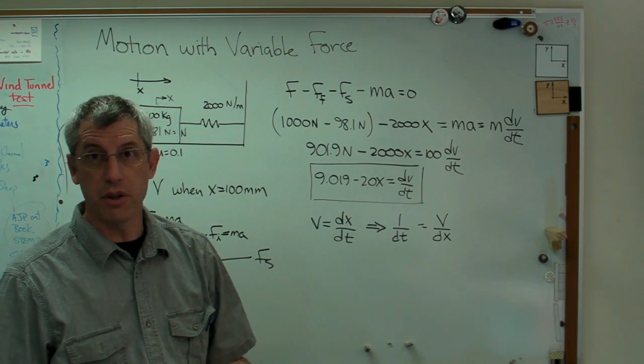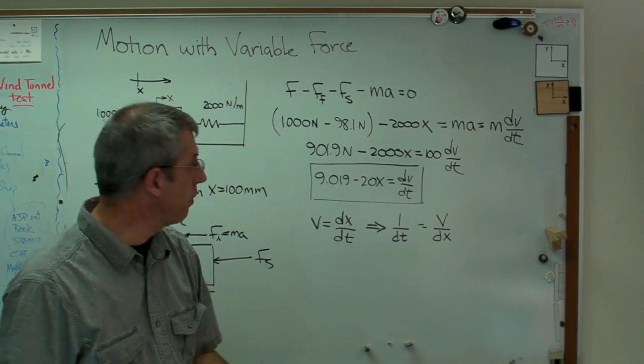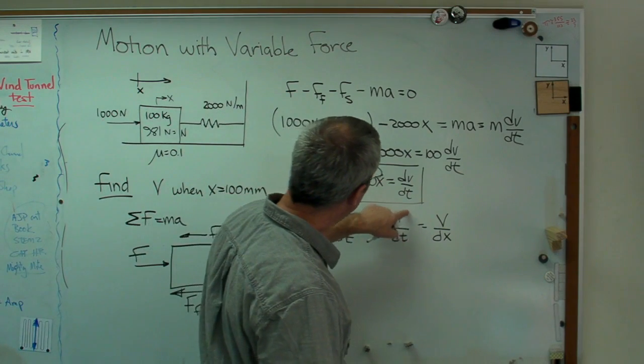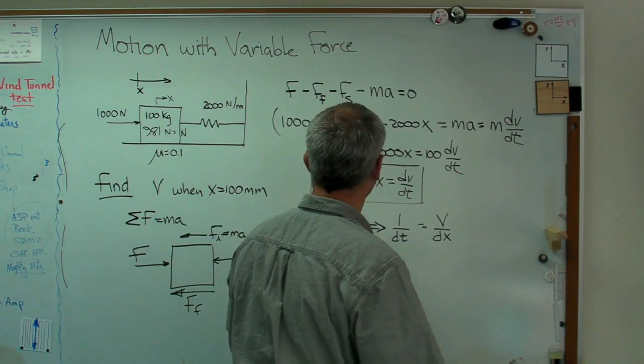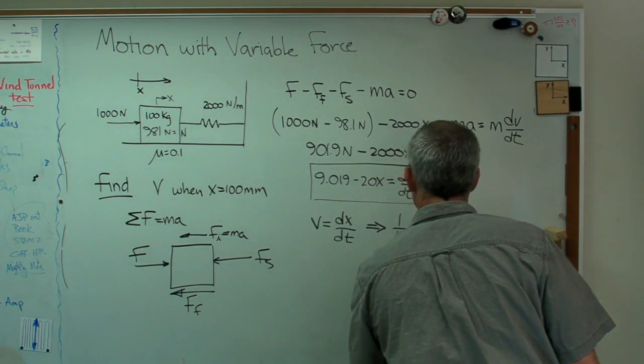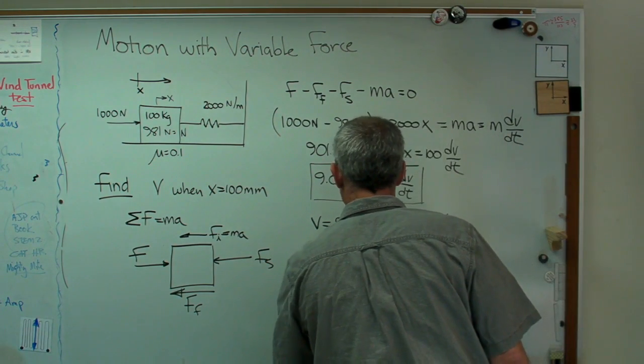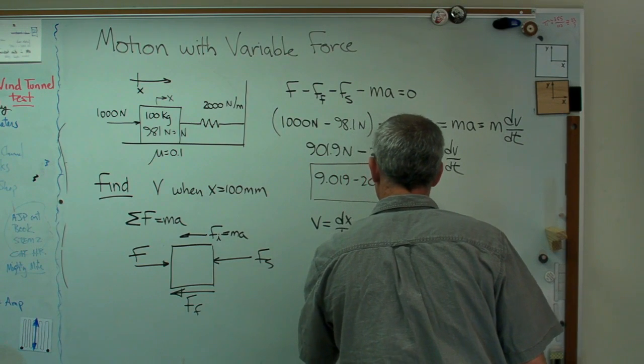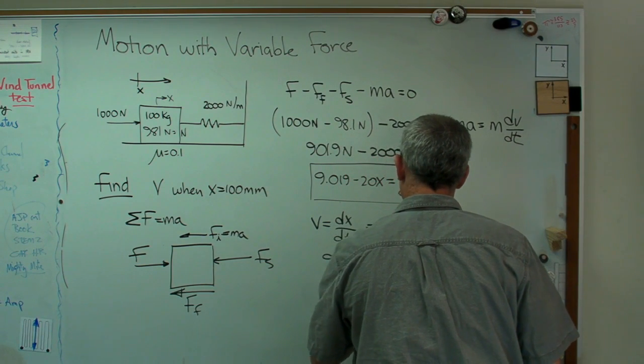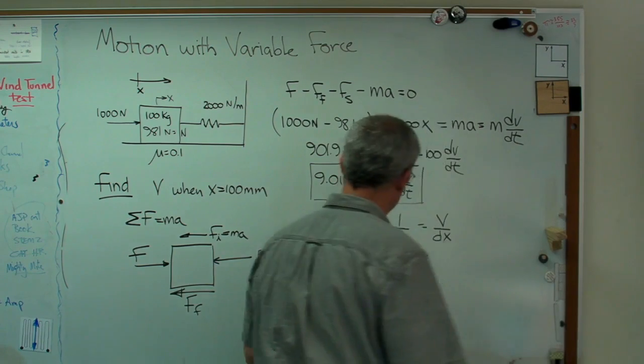And let me substitute this into here. What I'm going to get is vdv divided by dx equals 9.019 minus 20x. I'll make one more substitution. Make sure I stay in frame. Good.